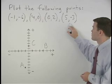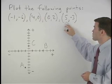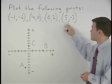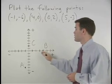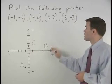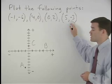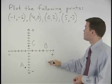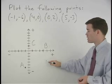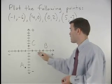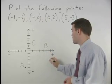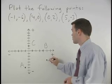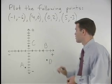For the point 5, negative 3: since the x coordinate is 5, that tells us we move 5 units to the right from the origin. Since the y coordinate is negative 3, that tells us we move 3 units down from the origin. So we go 5 to the right and 3 down, and label that point D.